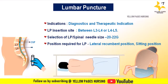The preferred positions for lumbar puncture are lateral recumbent or sitting. In the lateral recumbent position, also known as the knee-chest position, the patient brings their knees up toward their chest, flexing the hips and knees, with the head flexed and chin on the chest. This position opens up spaces between the lumbar vertebrae for easier access and allows measurement of CSF pressure.